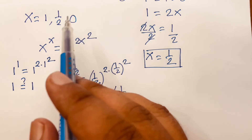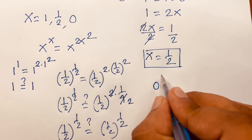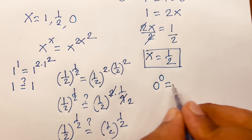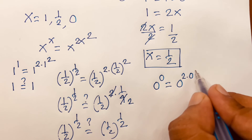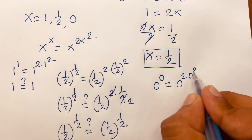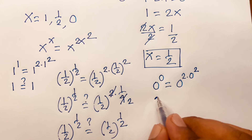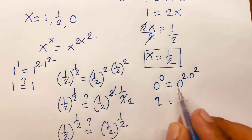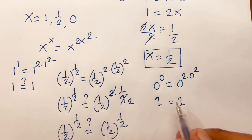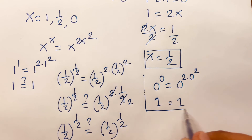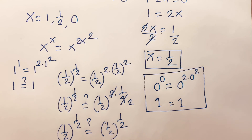We will also check x = 0. So 0^0 = 0^(2·0²). We get 0^0 = 1, which equals 1. But is this right or is it wrong? Please comment on the video — thanks for watching. Goodbye.